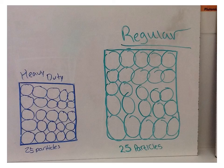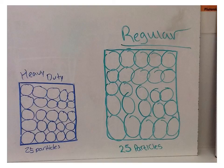So this is a whiteboard that a group did in class. They started out with the heavy-duty over here and the regular over there. I do like that we have particles drawn as circles — we like shapes for particles, and they're all circles because everything here is aluminum on both sides, whether it's heavy-duty or regular. We did determine, though, that the volume would not be the same, and we determined that the heavy-duty was 1.5 times thicker.